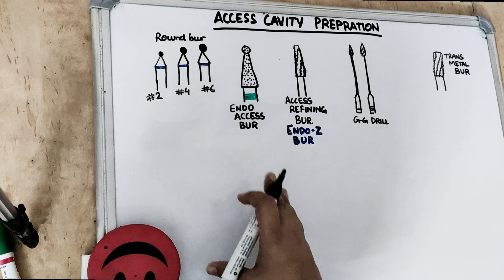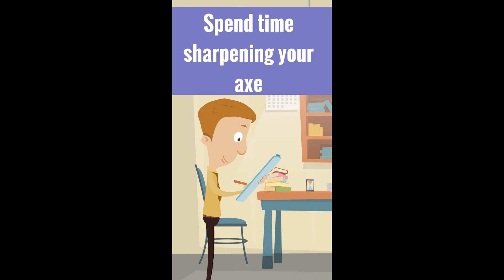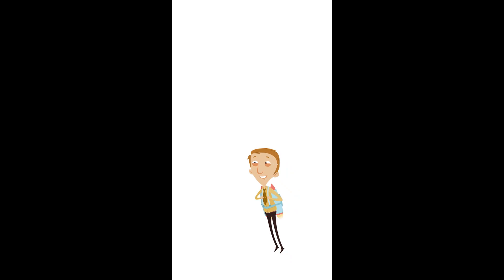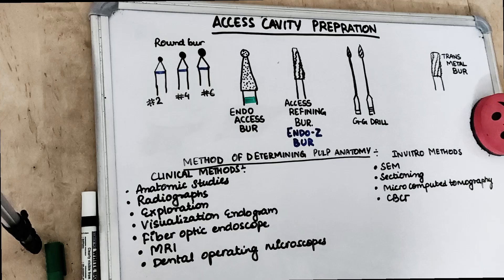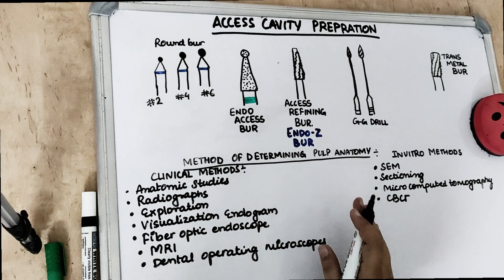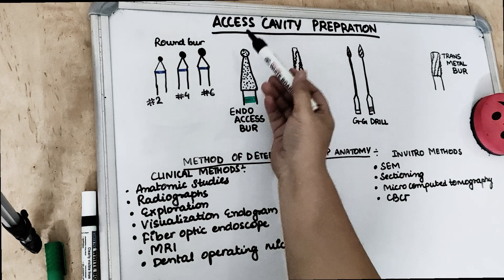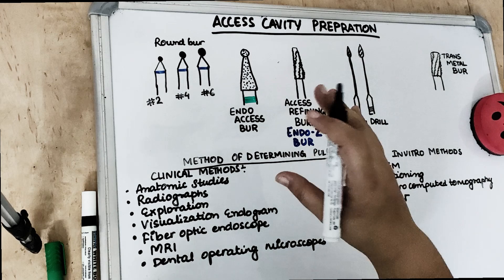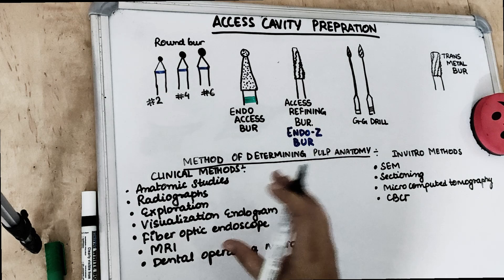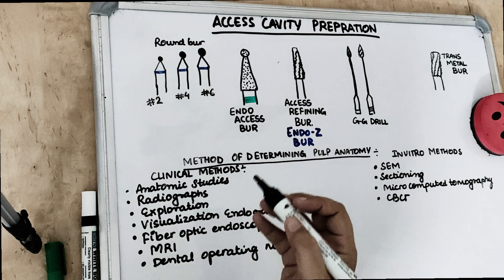Today's topic will cover the access cavity, and in the upcoming video we will cover the anatomy of the canals of each tooth. Access cavity preparation means preparing a cavity to access the root canals in order to remove all the pulpal tissues. To access the root canal, we should know the anatomy of the pulp. The methods to determine pulpal anatomy include clinical methods and in vitro methods.